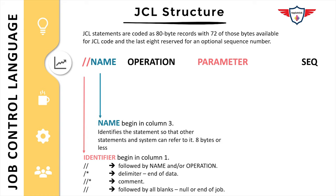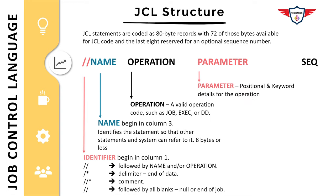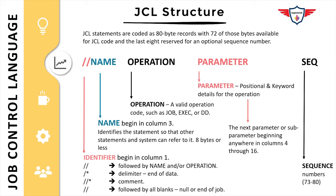The name begins in column three and generally identifies the statement so that other statements and the system can refer to it. It is generally eight bytes or less. The operation is a specific code — it could be JOB, EXEC, or DD. In the parameters field, you will have keyword parameters or positional parameters, such as message class, message level, and notify. If you're coding more parameters than can fit on one line, the continuation should start anywhere in columns four through 16. If it goes beyond column 16, it will result in a JCL error. The last field is the sequence number, occupying bytes 73 to 80, which is generally not used anymore.